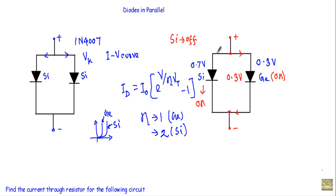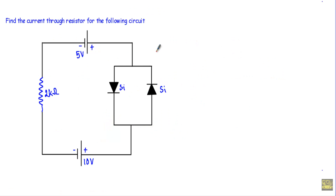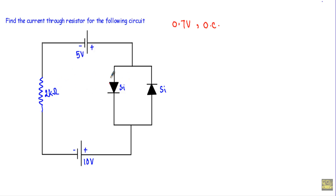One device will end up carrying most of the current from the source due to differences in device parameters and environmental conditions. Now, this is the first example of parallel diodes. Here, if a diode is in forward bias, I will replace it with a voltage source of 0.7V. If the diode is in reverse bias, I will replace it with an open circuit. We need to find the current through the 2kΩ resistor for this given circuit.